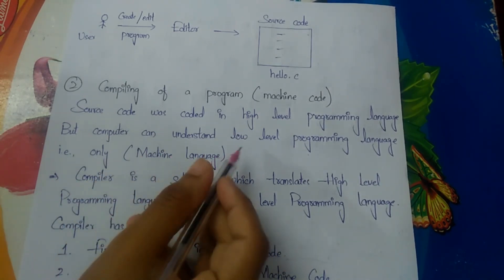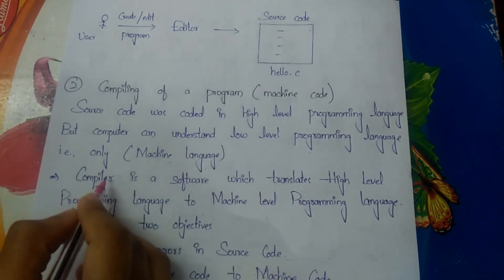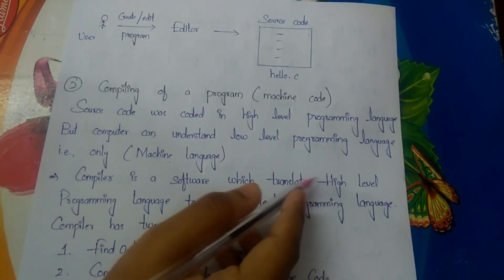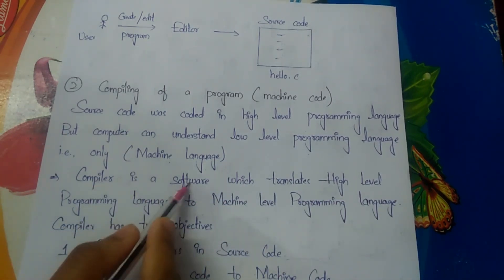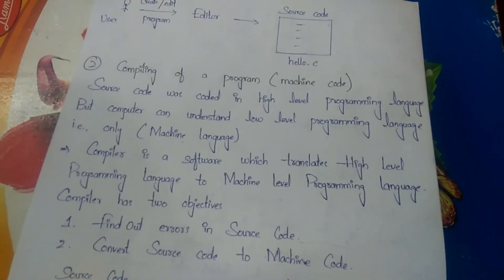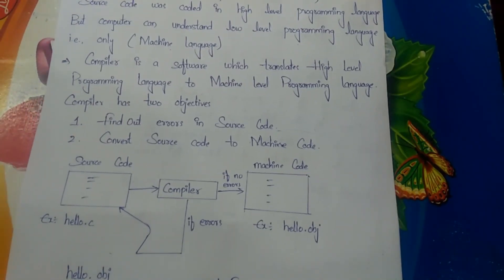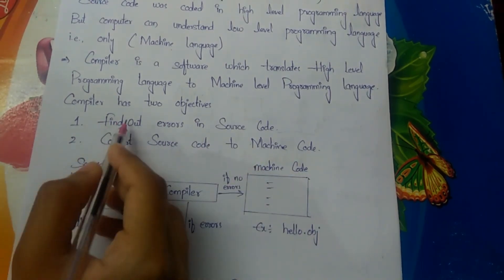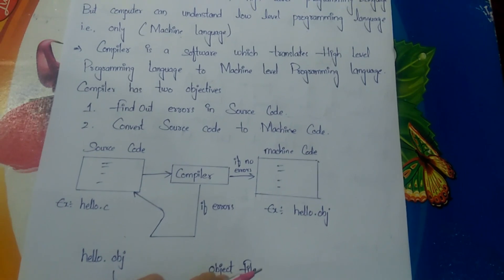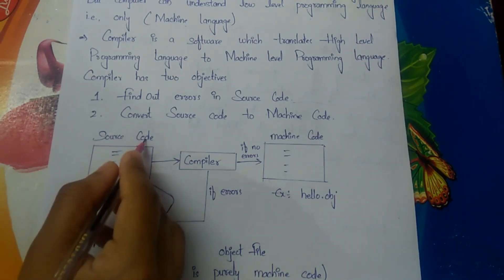The low-level programming language is also called machine language or machine code. The compiler is a software which translates the high-level programming language to machine-level programming language — it converts the source code to machine code. The compiler has two objectives: finding errors in the source code, and converting the source code to machine code.